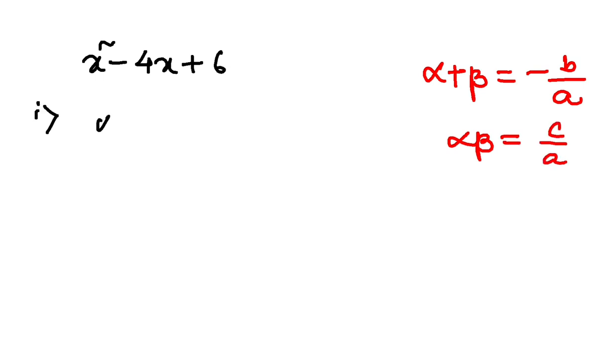So number one, it was alpha plus beta, very easy. Minus b by a, so minus of minus 4 by 1, that is 4.